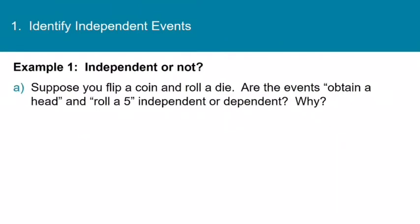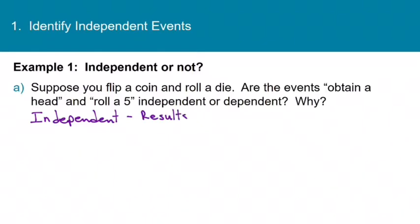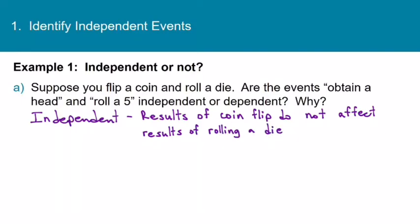Now let's look at example one, where we determine if two events are independent or not. The first one says: suppose you flip a coin and roll a die. Are the events 'obtain a head' and 'roll a five' independent or dependent, and why? Well, if I flip a coin and get heads, that does not affect the probability that I'll get a five when I roll the die. So these two events are independent because the occurrence of obtaining a head does not affect the probability of rolling a five.